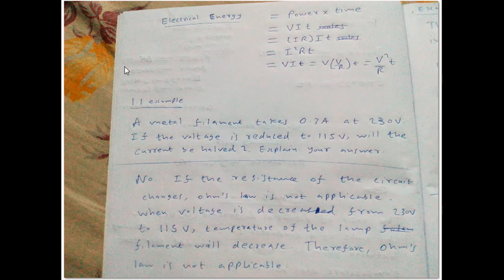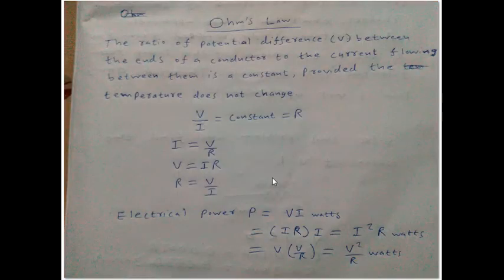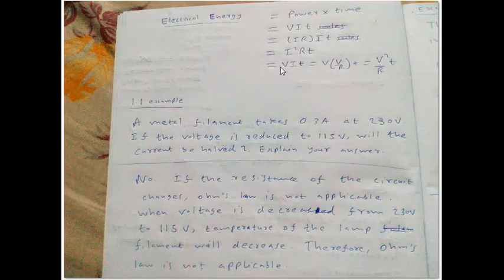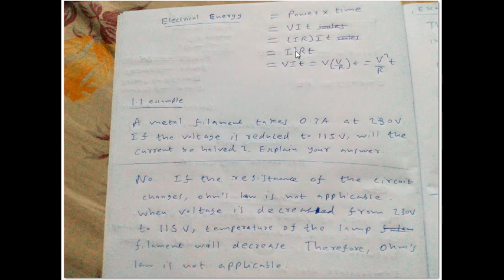Electrical energy E equals power multiplied by time. Substituting P = VI gives E = VIt. Further substituting V = IR gives E = I²RT. Another formula is E = V²T/R. These formulas you have to know — they may ask questions from electrical energy or electrical power, and they are usually not overly complicated.